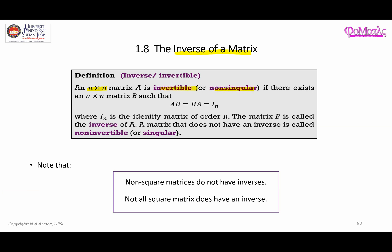...A and B, either in the order A×B or B×A, the result is going to be an identity matrix of the same size, order n — the same size as matrix A and matrix B. Therefore in this situation we can call matrix B the inverse of A.